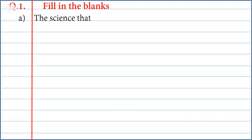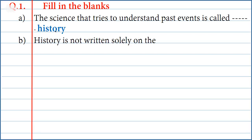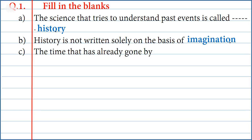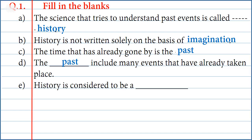Question 1 — Fill in the blanks: A. The science that tries to understand past events is called History. B. History is not written solely on the basis of Imagination. C. The time that has already gone by is the Past. D. The Past includes many events that have already taken place. E. History is considered to be a Scientific discipline.